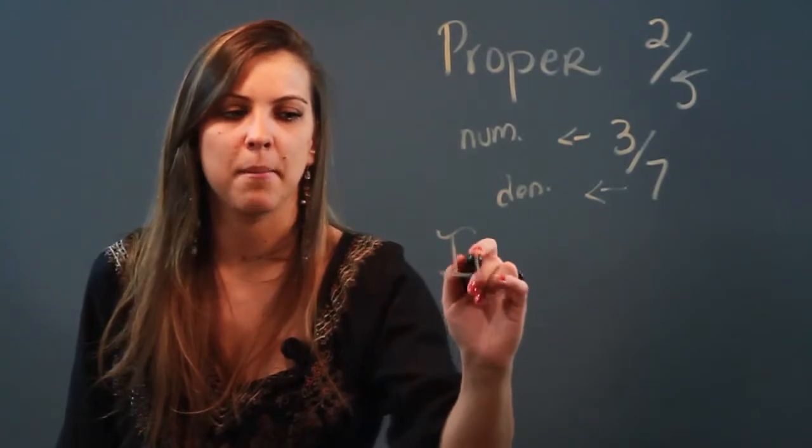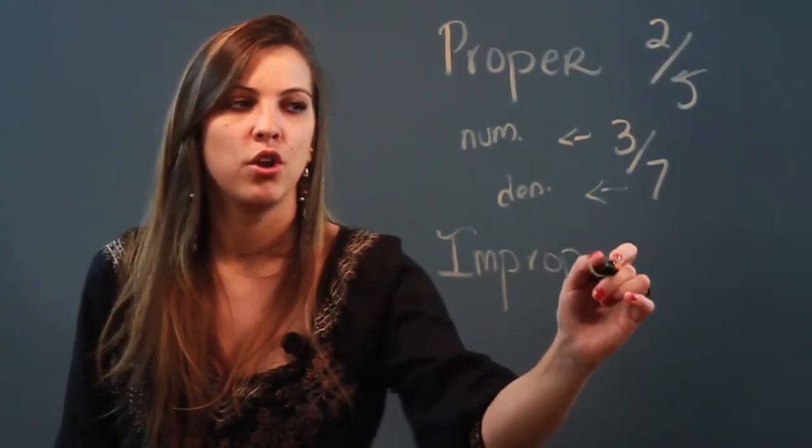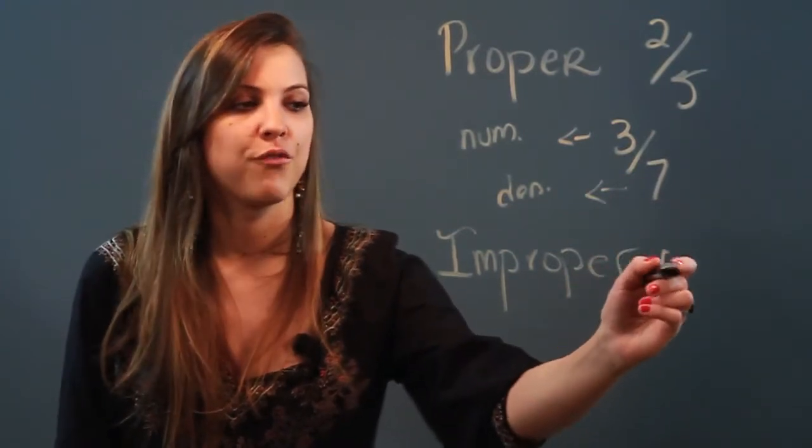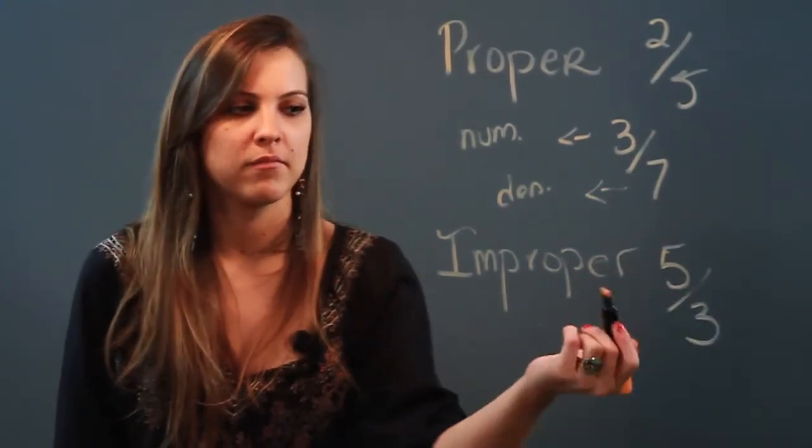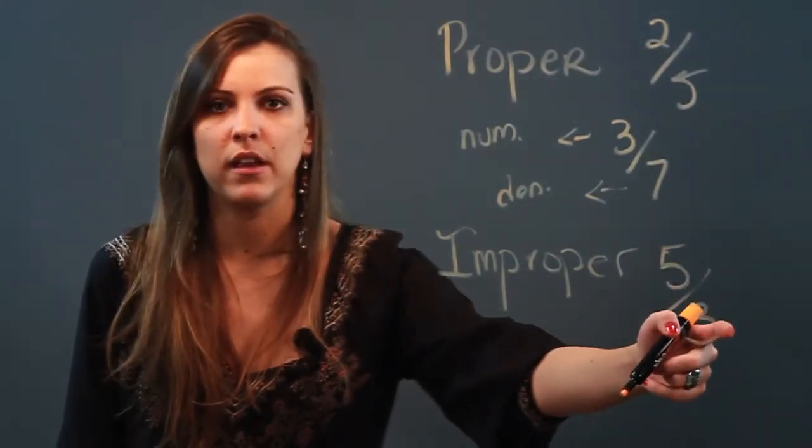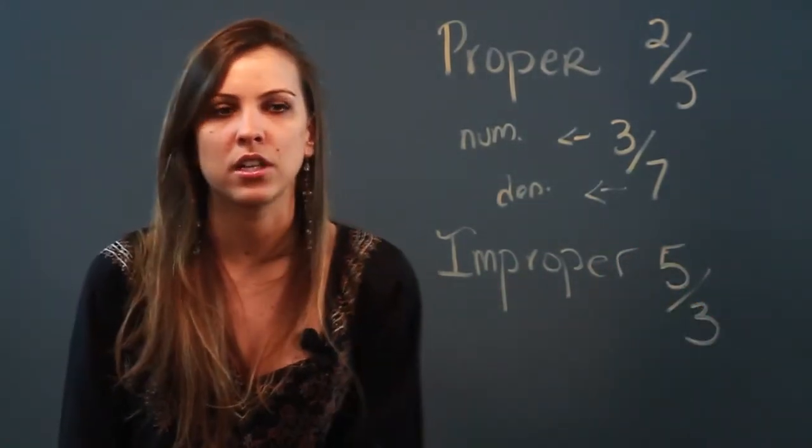Now an improper fraction is going to be the exact opposite. Improper fractions have numerators that are larger than the denominator. For example, five over three—the numerator five is larger than the denominator three, so that makes it an improper fraction.